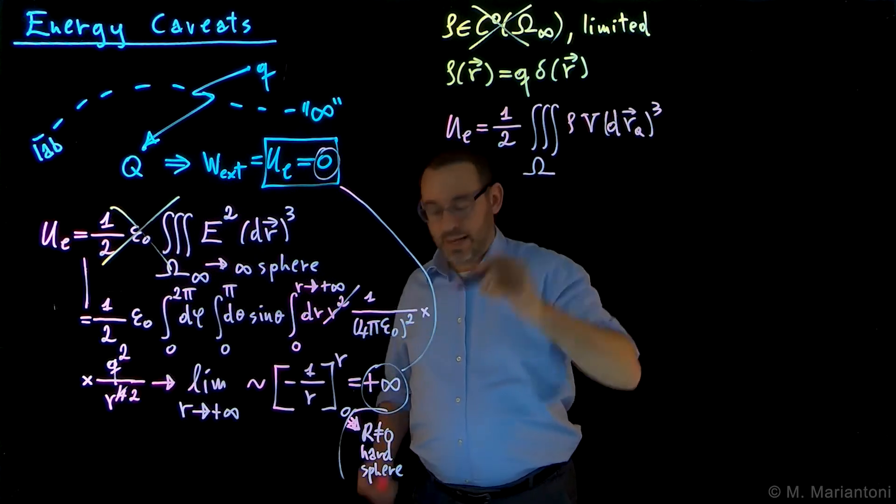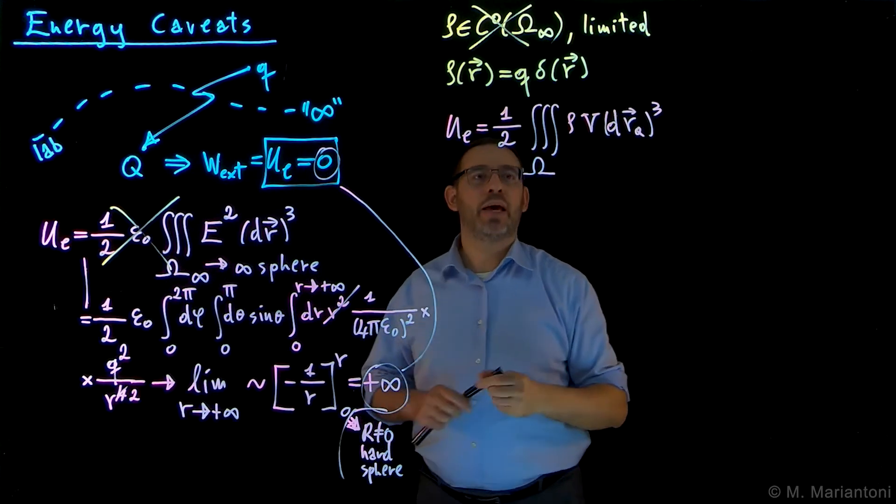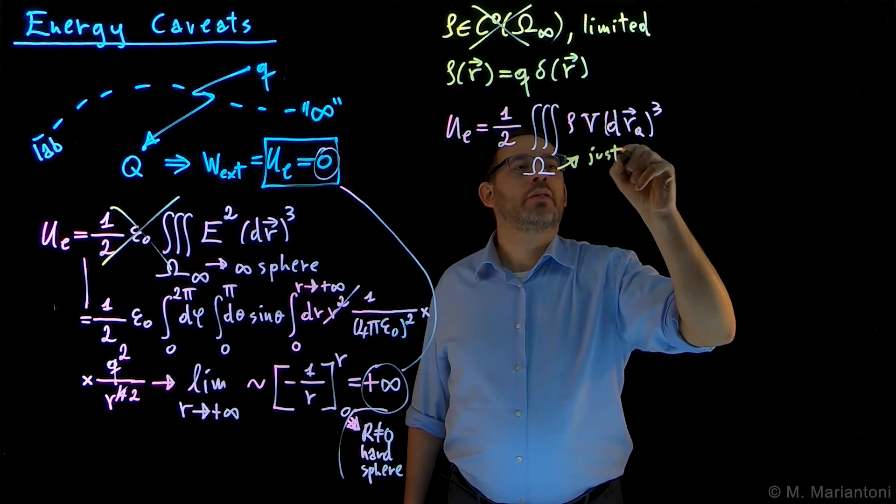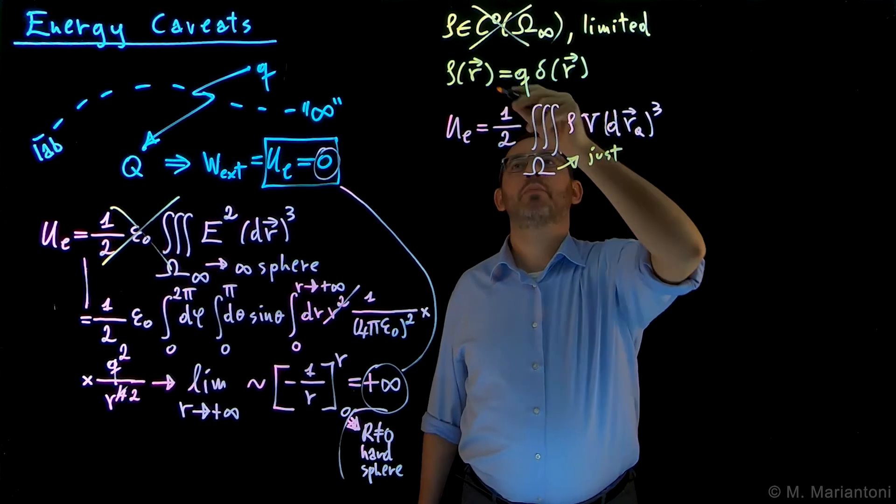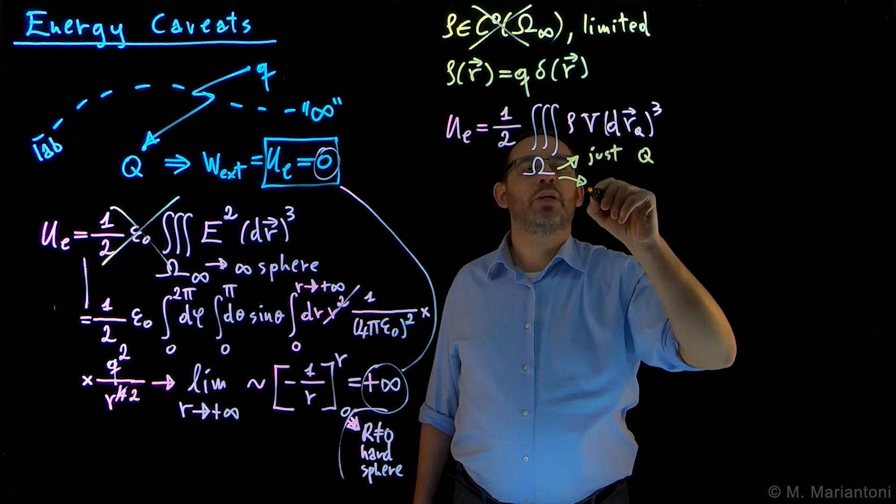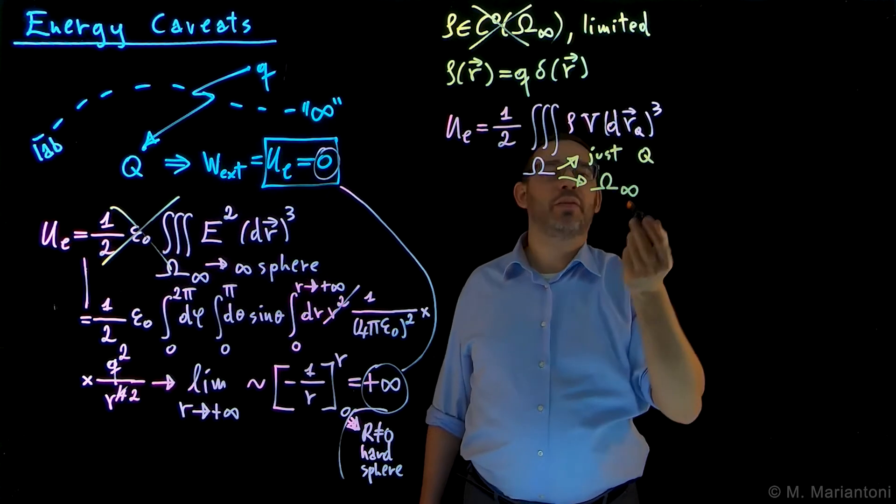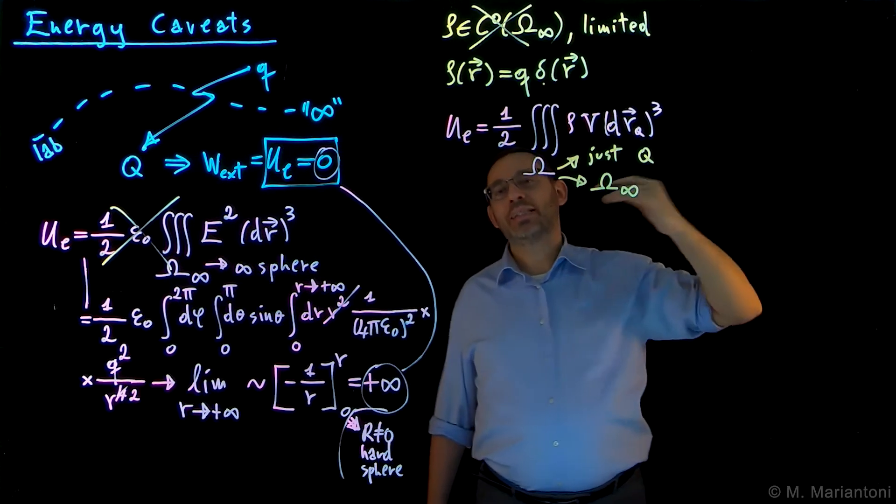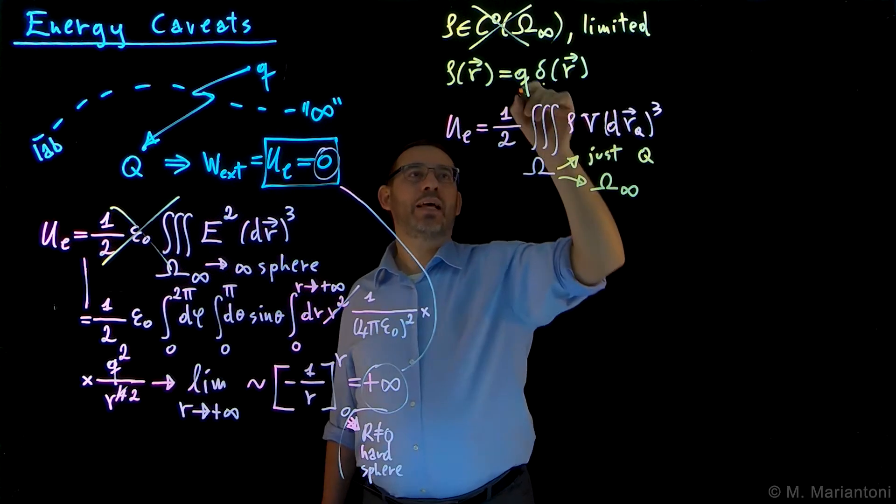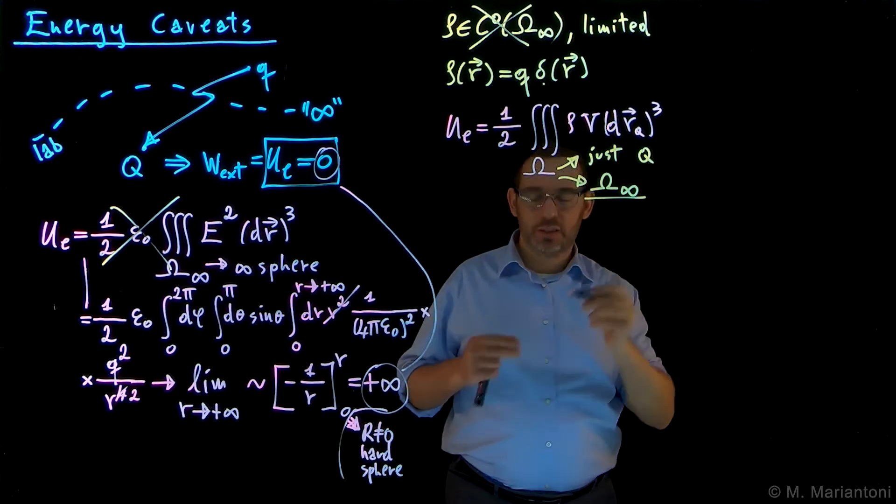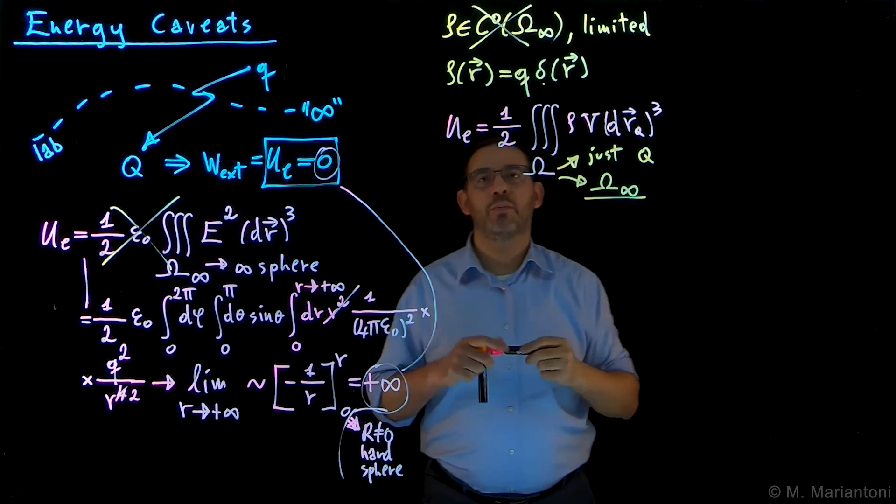Note again that, let's make a note on this omega. This omega could be either just the point where the particle is located, so just Q, or if you want, it can be the entire omega infinity. It doesn't matter, because we know that the Dirac delta, which is eventually what we need to use here, is zero for any other point except for where the charge is located. So let's use the infinite one because it's a little bit more formal, but it gives the same result, obviously.